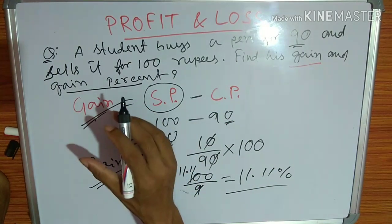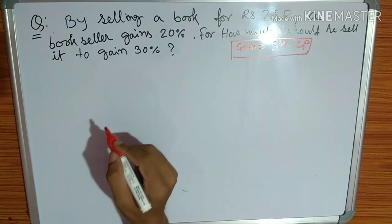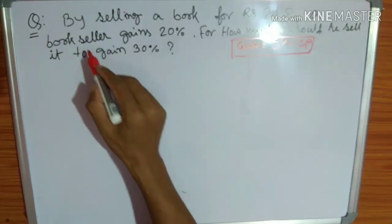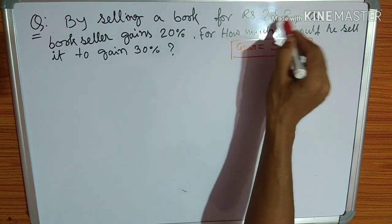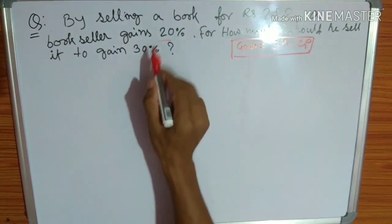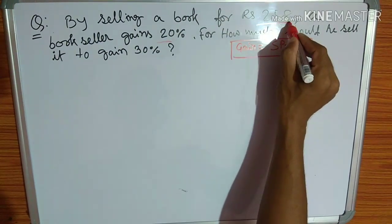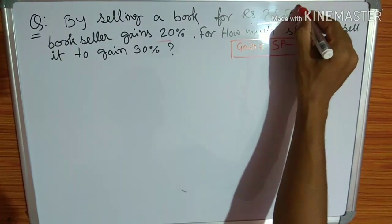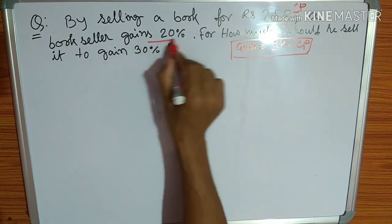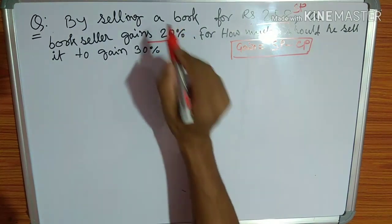Gain percentage is a key concept. Let's look at a basic problem. By selling a book for rupees 258, a bookseller gains 20 percent. The selling price here is 258 — what is the gain percent? The gain percent is 20 percent.